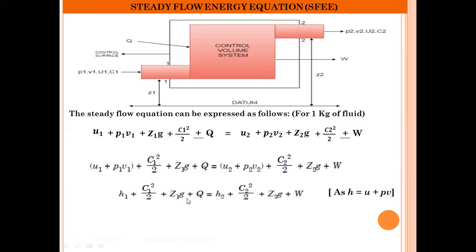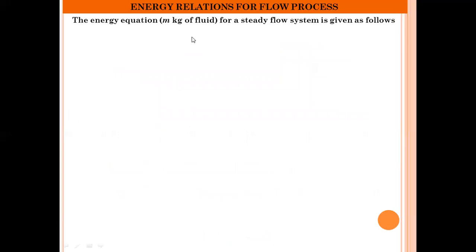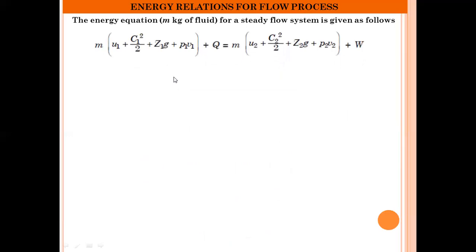By neglecting Z1 and Z2 — that is, considering the system is kept on the datum surface so Z1 = Z2 = 0 — the equation reduces to: H1 + C1²/2 + Q = H2 + C2²/2 + W. This is the steady flow energy equation applicable to an open system for 1 kg of fluid. If the mass of fluid is M kg, we multiply the equation through by M to obtain the SFEE for M kg of fluid.